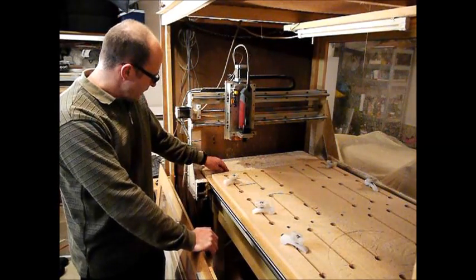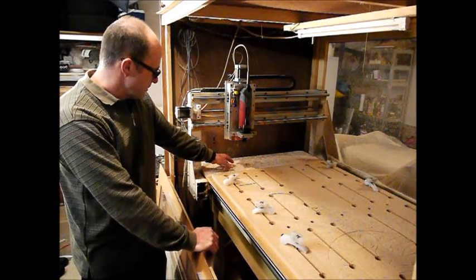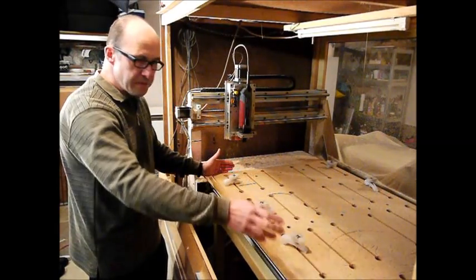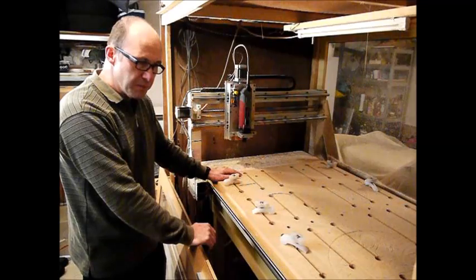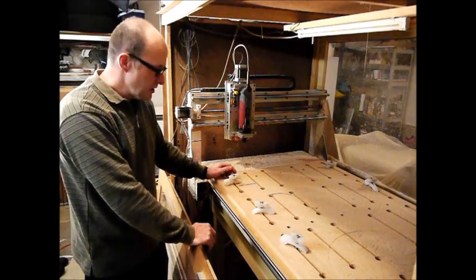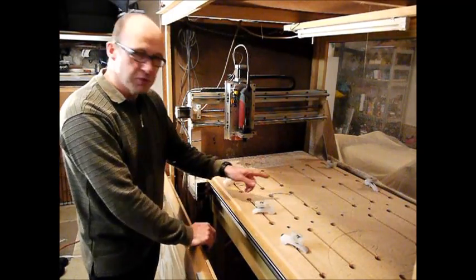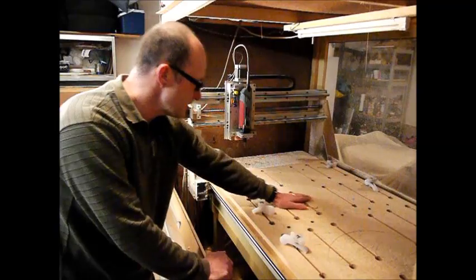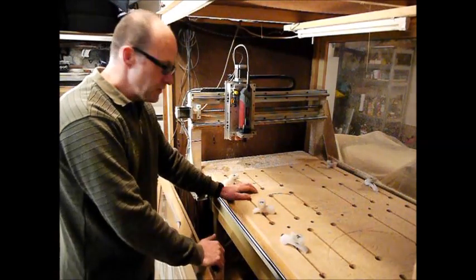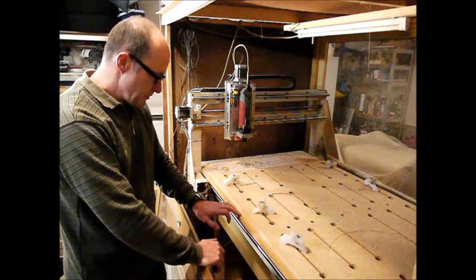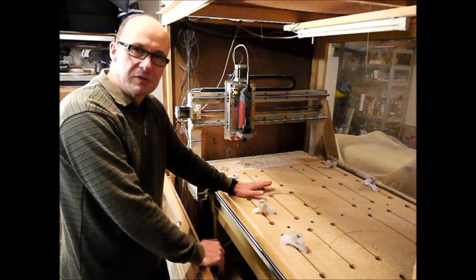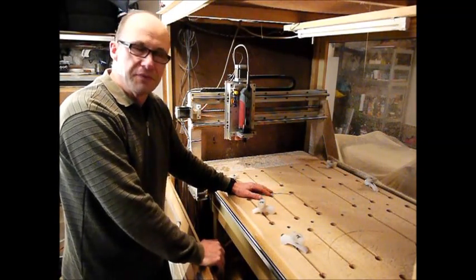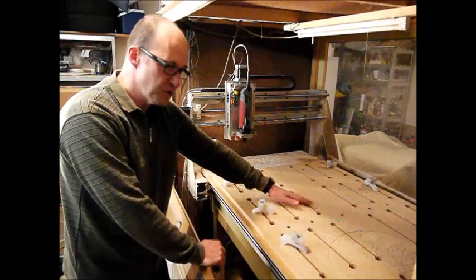The bed is a reasonable size, this is a 1200 by 600 spoil board. When I say spoil board it means that if the cutter goes through, you can probably see on here all these marks, if the cutter goes through the material it's not going to do any damage to the bottom bed, it just does damage to this spoil board and this spoil board gets replaced probably once every six months or whatever when that's been chewed up pretty well.